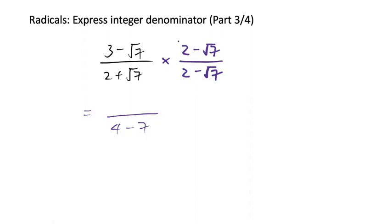To make it easier to visualize, we can put brackets around it. So we have 3 minus root 7 times 2 minus root 7, and then we can FOIL that out: first, inner, outer, last.